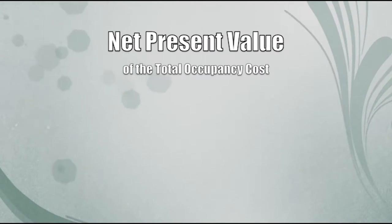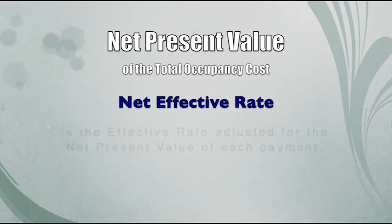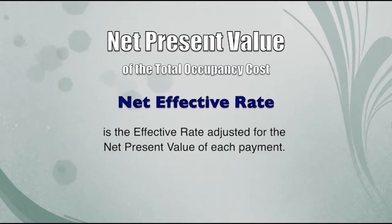A shortcoming of total occupancy cost is that it doesn't account for the time value of money. The when of payments can affect overall cost as much as the amount — if one space has lower total cost but very high initial costs like tenant improvements, a tenant may benefit from selecting an alternative because cost today is worth more than cost in the future. A net present value method computes the NPV of total occupancy cost using an appropriate discount rate, creating a net effective rate adjusted for present value.